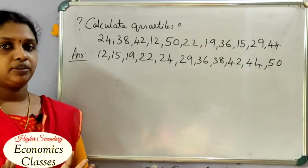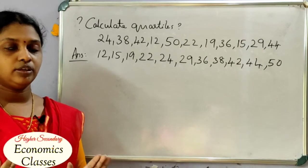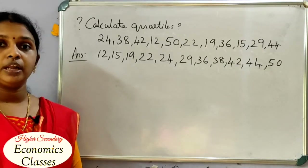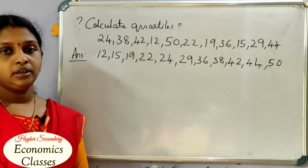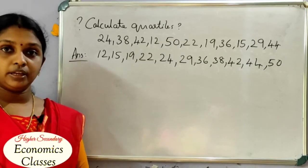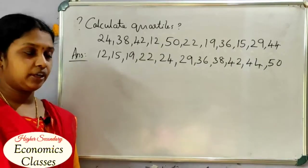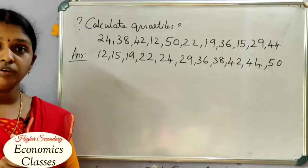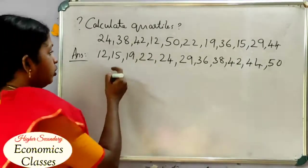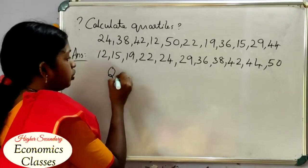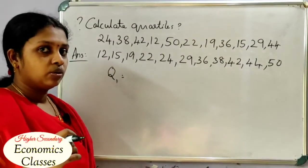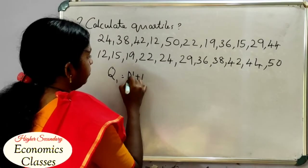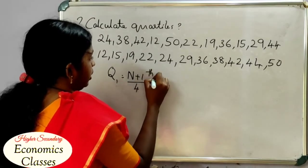In the individual series, the quartiles — if we look at Q1 and Q3, we will see the lower quartile and upper quartile. The question is Q1. Q1 for the individual series — what does it mean? It is the (N+1)/4 th item.